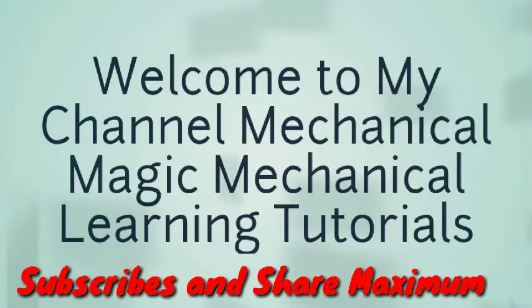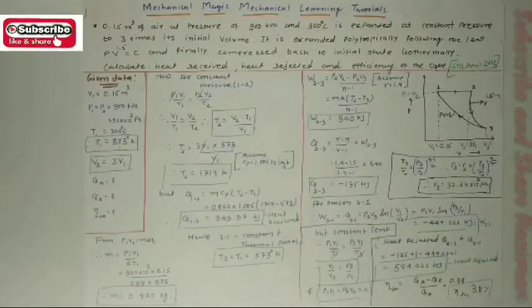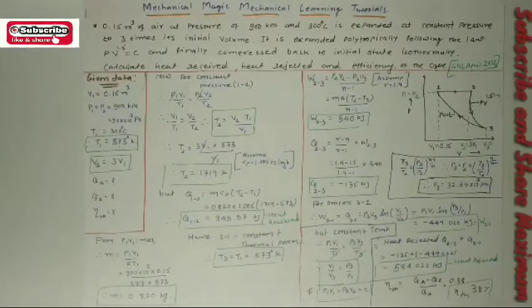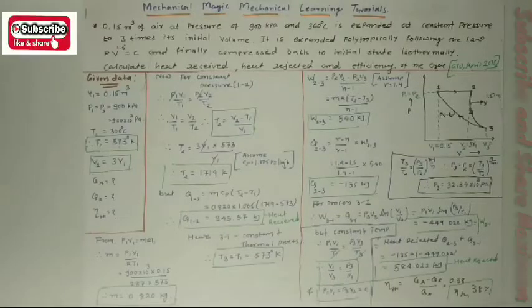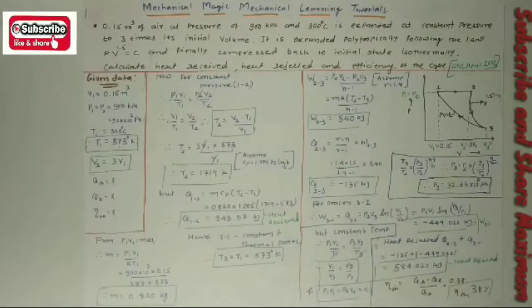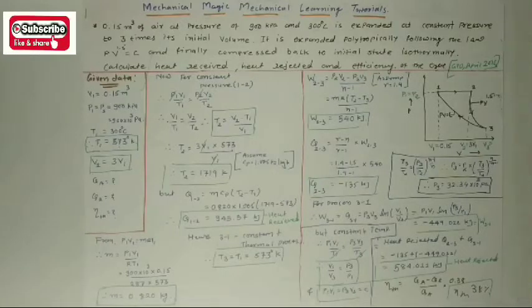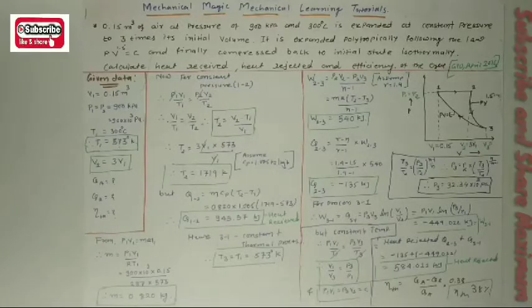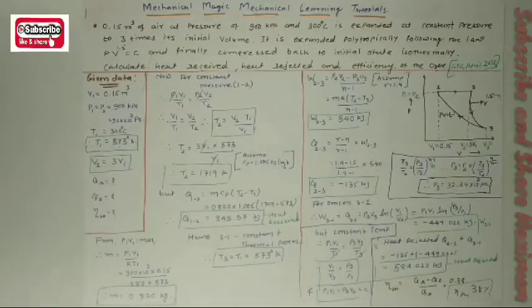Welcome to my YouTube channel Mechanical Magic, mechanical learning tutorials. In this video I am talking about some examples of properties of gas, specifically expansion at constant pressure, expansion at a polytropic process, and then compression at an isothermal process — three processes for a single problem: constant pressure expansion, polytropic expansion, and compression at constant temperature.